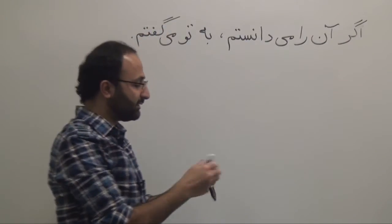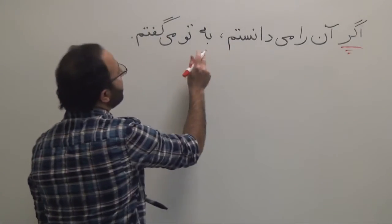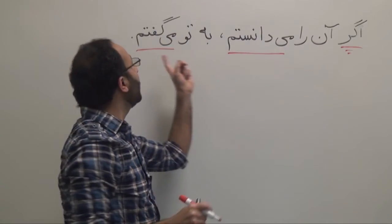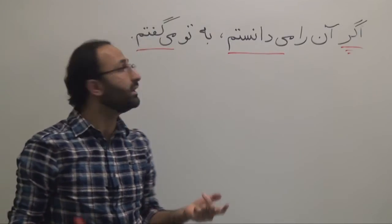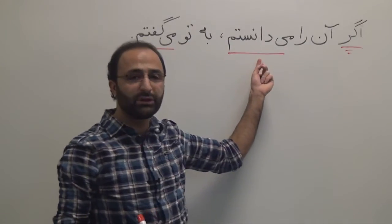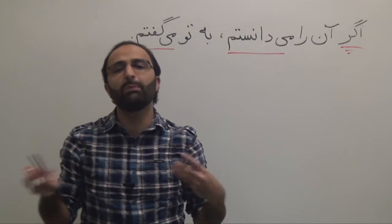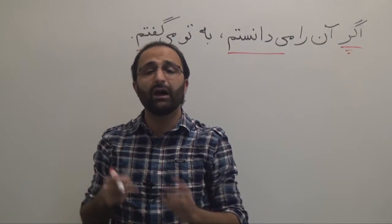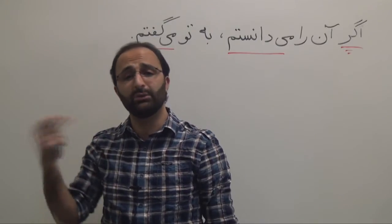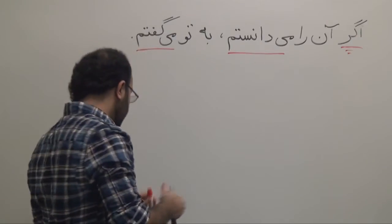So, as you can see, in our if clause and the main clause, the verbs are in the past tense. You are saying that if I knew, I would tell you — but it's highly improbable that I would get to know that. But if under any circumstances I got to know, I will tell you — but the sentence implies that it's not probable. Let's look at another example.